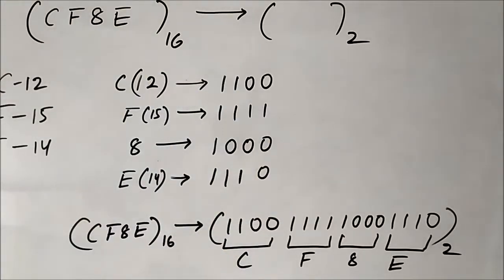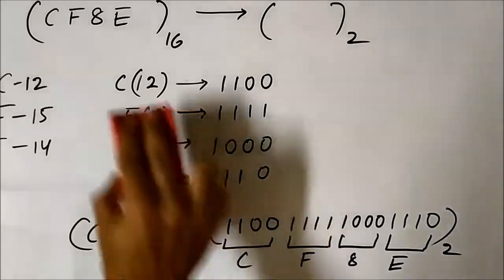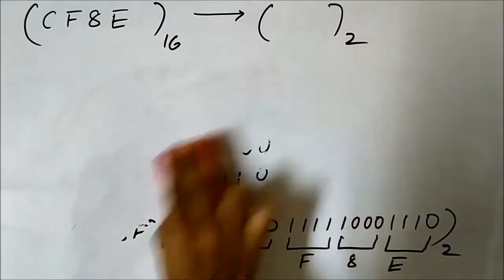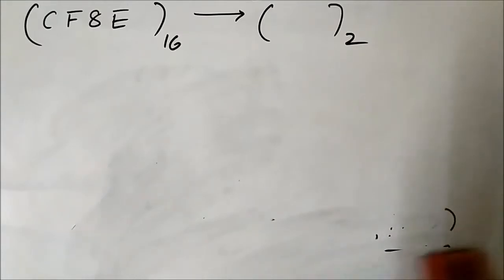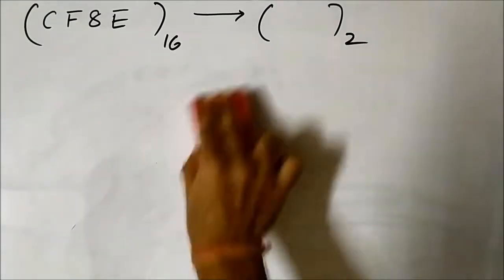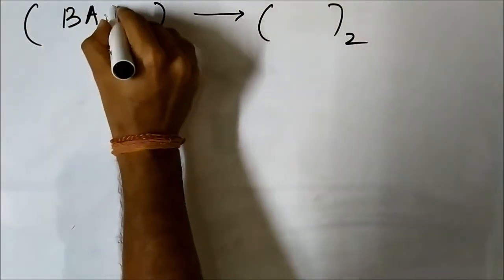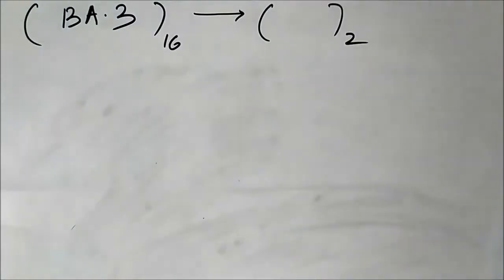This is the binary representation of the given hexadecimal number CF8E. Now let us take another example and see how we can convert a hexadecimal number with a fractional part into binary form. Let that number be BBA.3 hexadecimal.